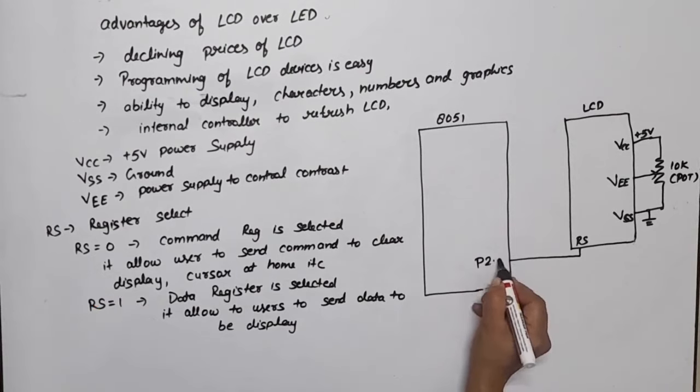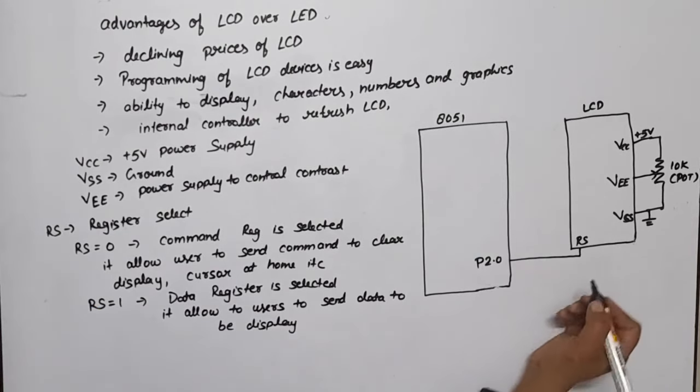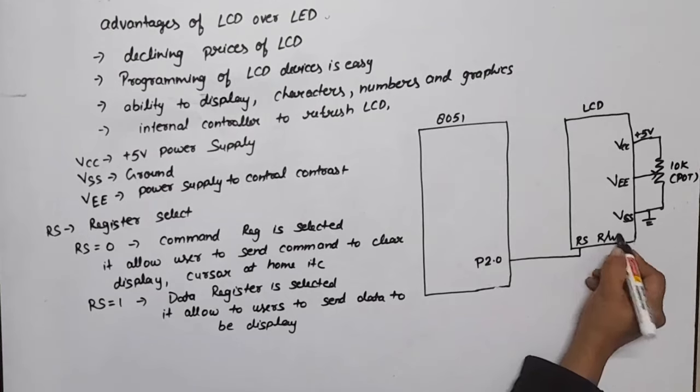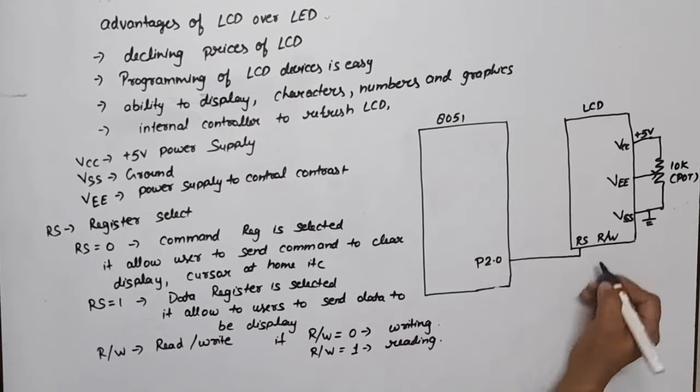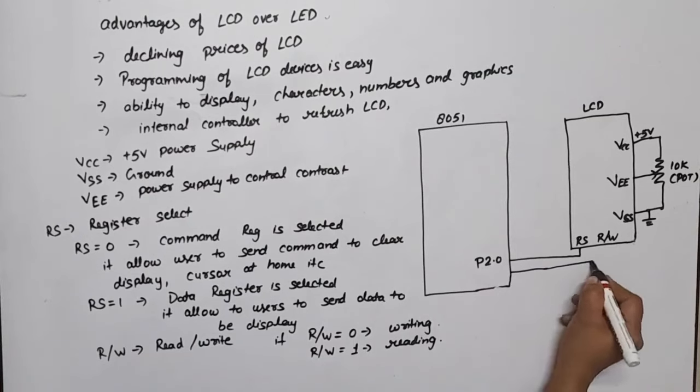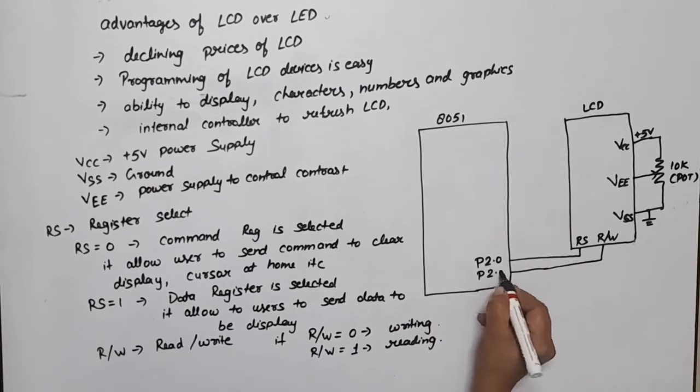Next pin is R/W. This is basically Read/Write. If R/W equals 0, it means writing operation on LCD. And if R/W equals 1, then it means reading data or reading content from the LCD. This will be connected with P2.1.